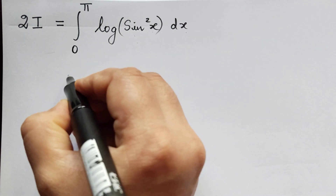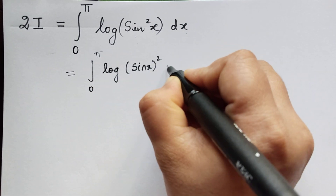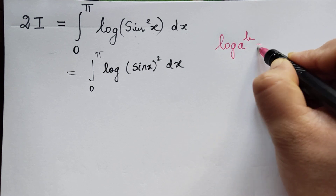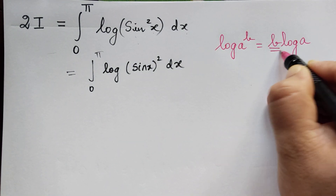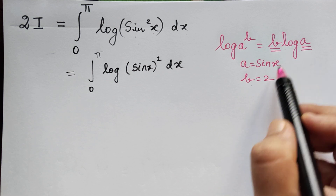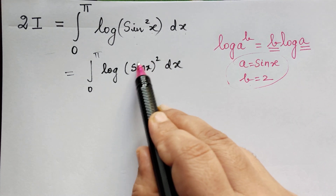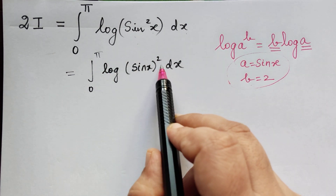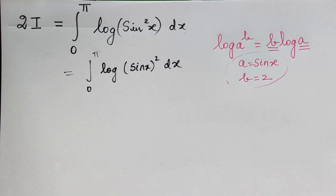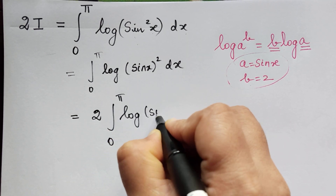This integral can be written as the integral from 0 to pi of logarithm of (sin x) squared dx. Using the logarithm power rule — log a to the power b equals b log a — where a is sin x and b is 2, we get 2 log(sin x). Since 2 is a constant it comes outside the integral, giving 2I equal to 2 times the integral from 0 to pi of logarithm of sin x dx.